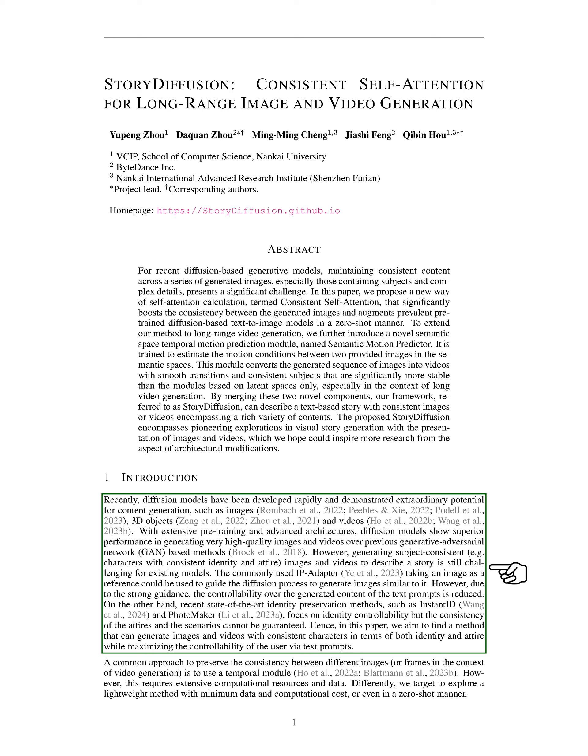However, ensuring consistency in generated images and videos, especially in terms of characters' identity and attire, remains a challenge. Existing methods like IP Adapter and identity preservation techniques focus on guiding the generation process using reference images or maintaining identity control, but struggle with ensuring consistency in attire and scenarios.